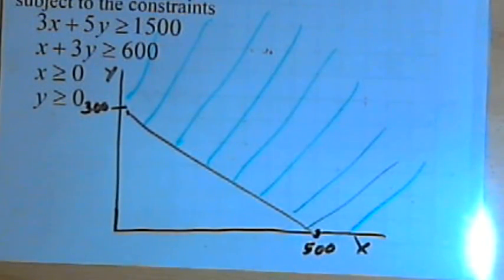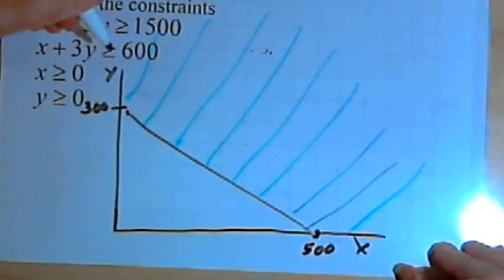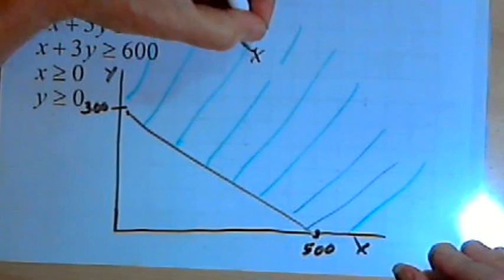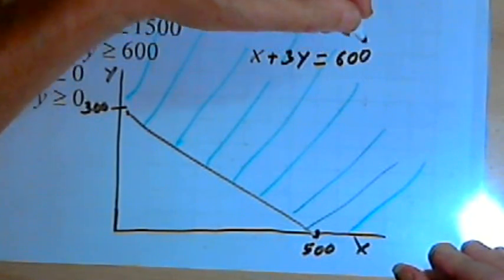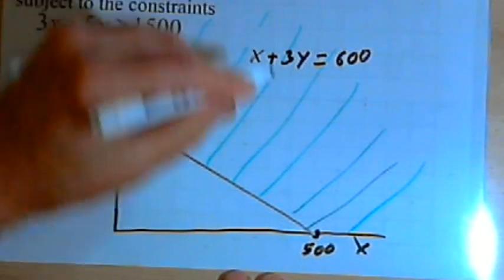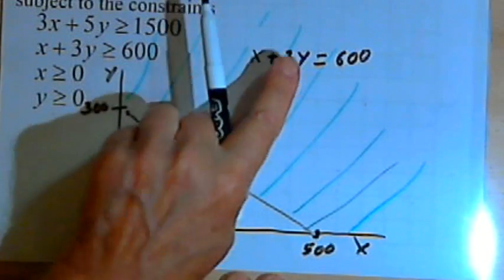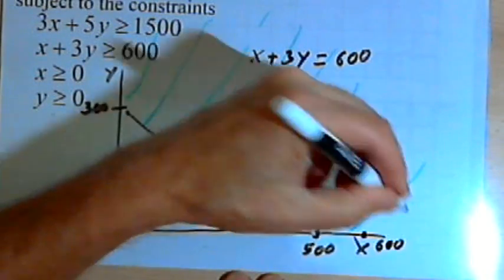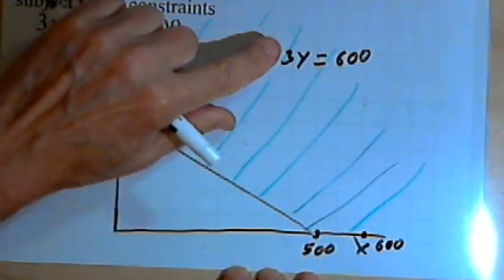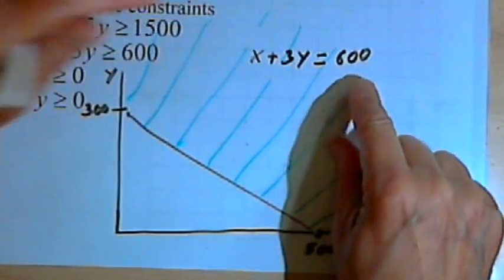Now let's deal with the second inequality. That one was x plus 3y is greater than or equal to 600. So I'll make that an equation, x plus 3y equals 600. My x-intercept, which is what happens when y is 0, is just going to be x equals 600. My y-intercept will happen when x is 0, so I would have 3y equals 600, which means y would equal 200.